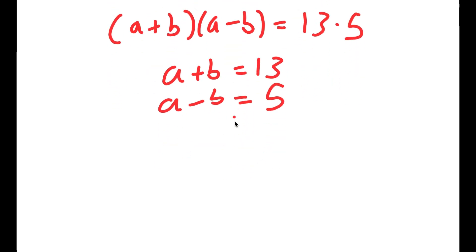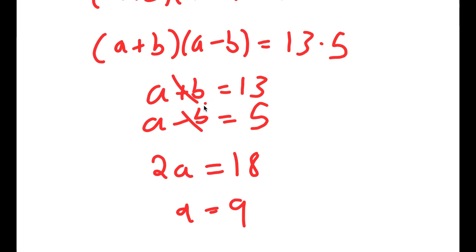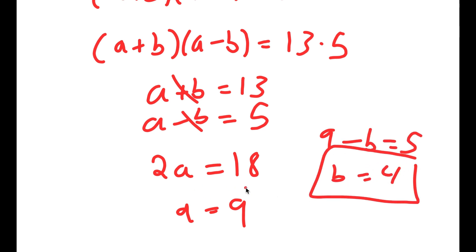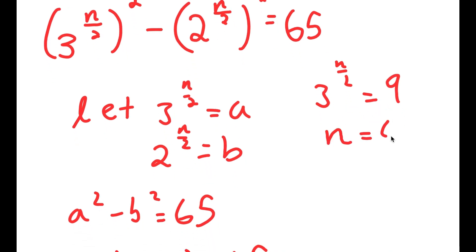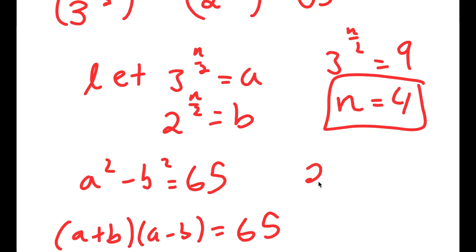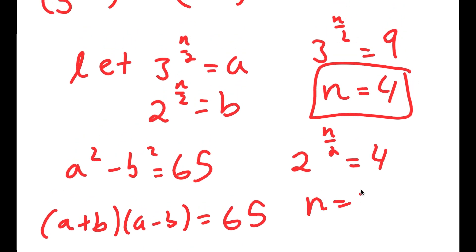We can say that a plus b is equal to 13, and a minus b is equal to 5. So now I have a system of equations. I'm going to add them: 2a equals 13 plus 5, which is 18, meaning a equals 9. And if a equals 9, plugging back in, I get 9 minus b is equal to 5, meaning b is equal to 4. Now remember how we let a equal 3 to the power of n over 2: so 3 to the power of n over 2 equals 9, meaning n is equal to 4. And 2 to the power of n over 2 is equal to 4, meaning again n is equal to 4.